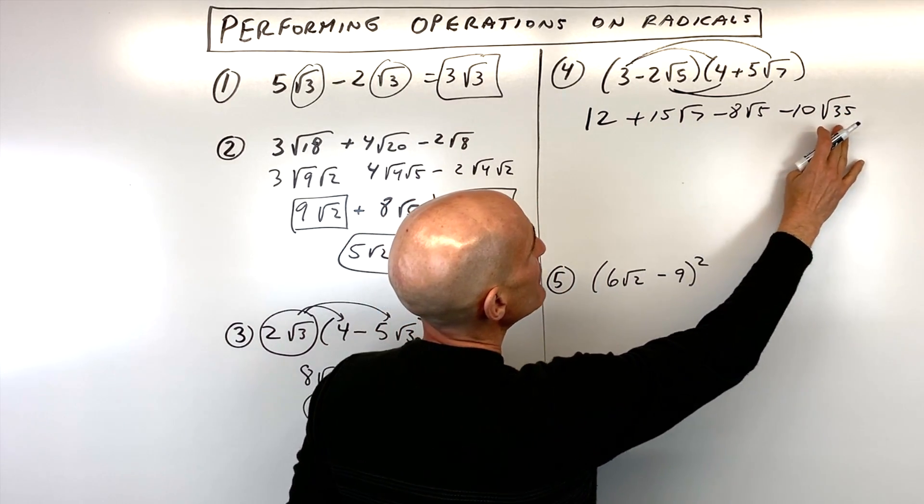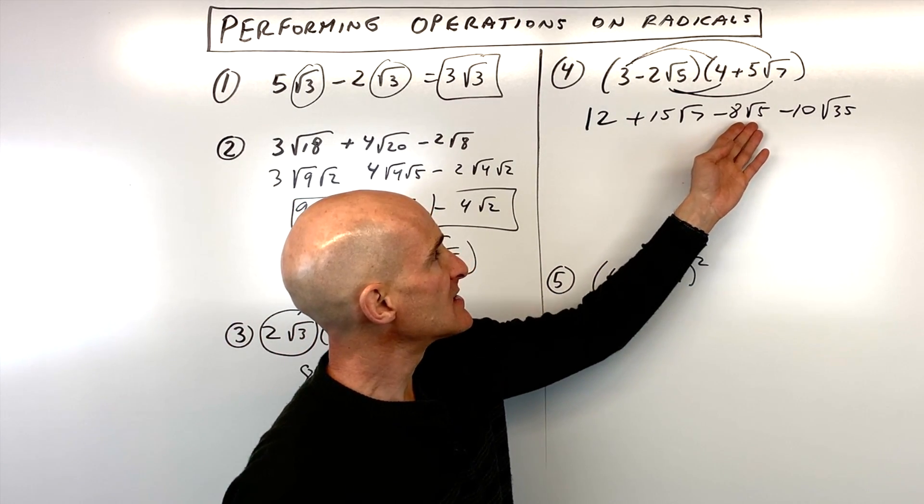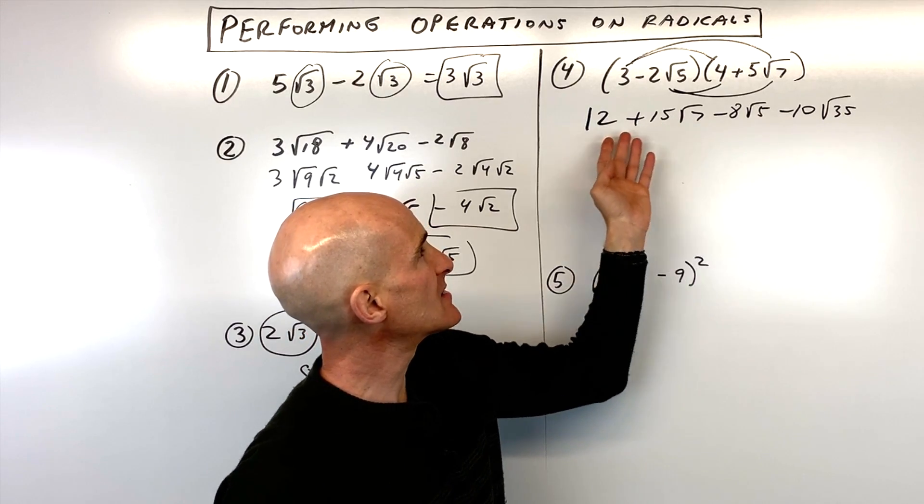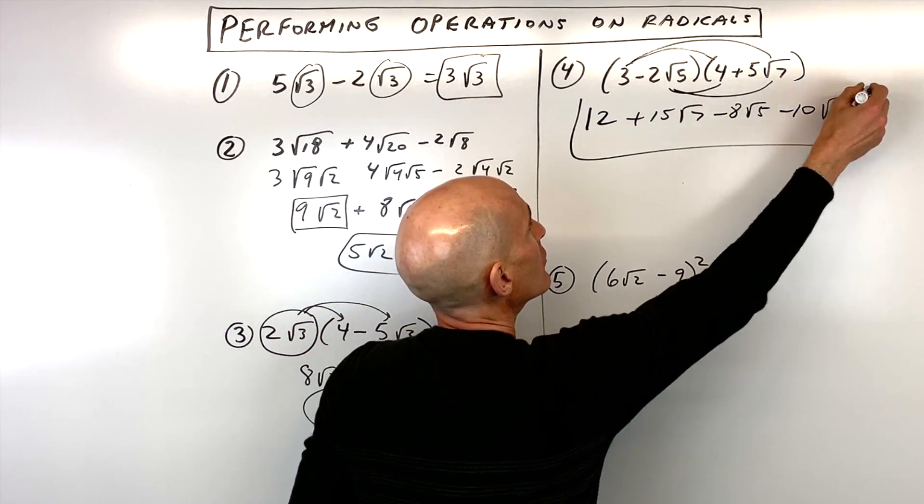Now we look to see if we can simplify further. 35 is just seven times five. There's not a perfect square we can divide out of that. Same thing here, five is just five and one, seven is just seven and one. So that's as far as we can simplify. There's no like terms that we can combine. So this is our final result.